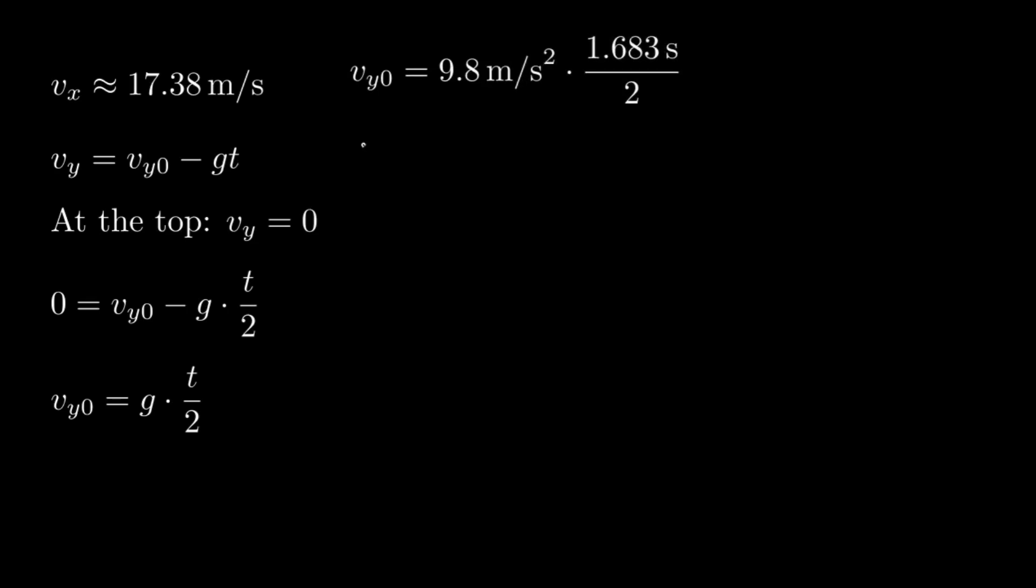We can now turn our attention to vertical motion. The ball's vertical velocity drops over time due to gravity. At the peak, vertical velocity is zero. We use that midpoint to give us the initial vertical speed, which is about 8.25 meters per second.